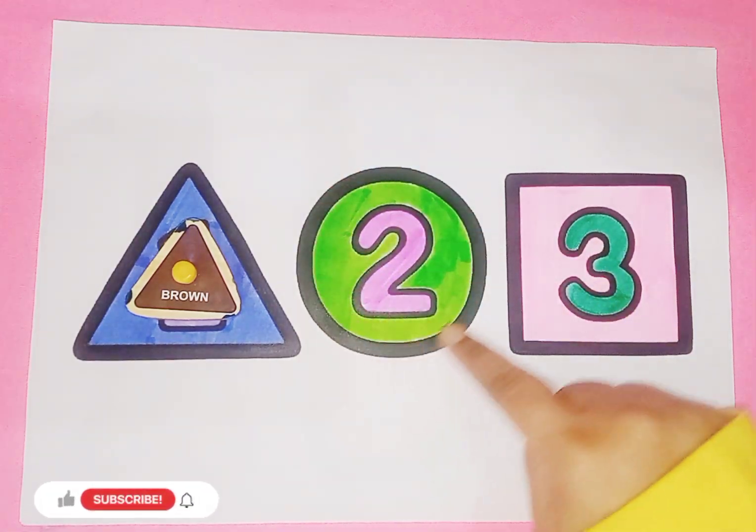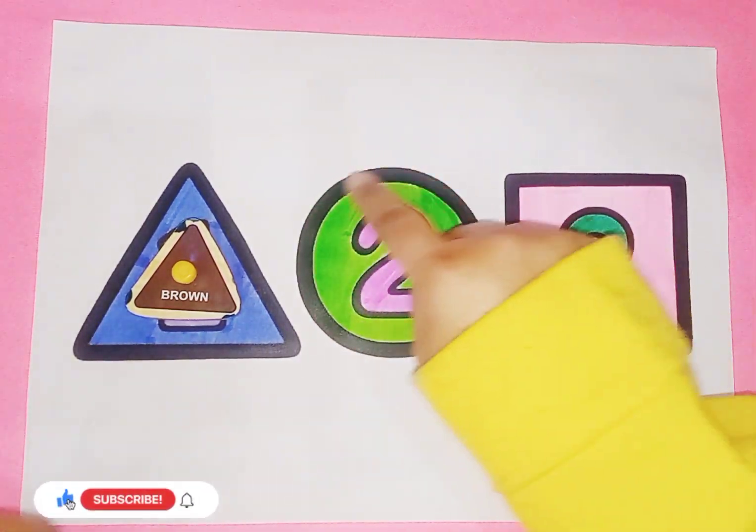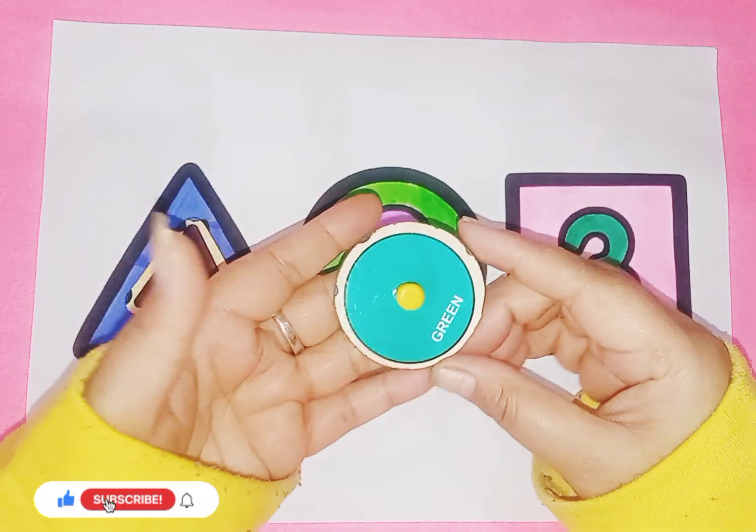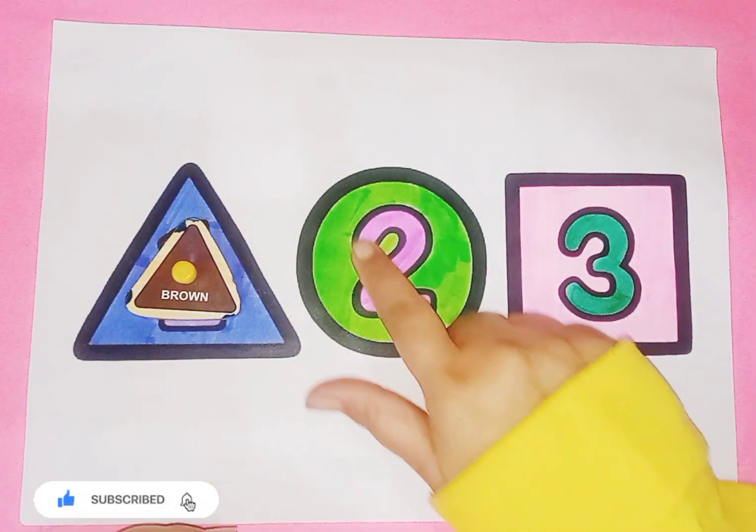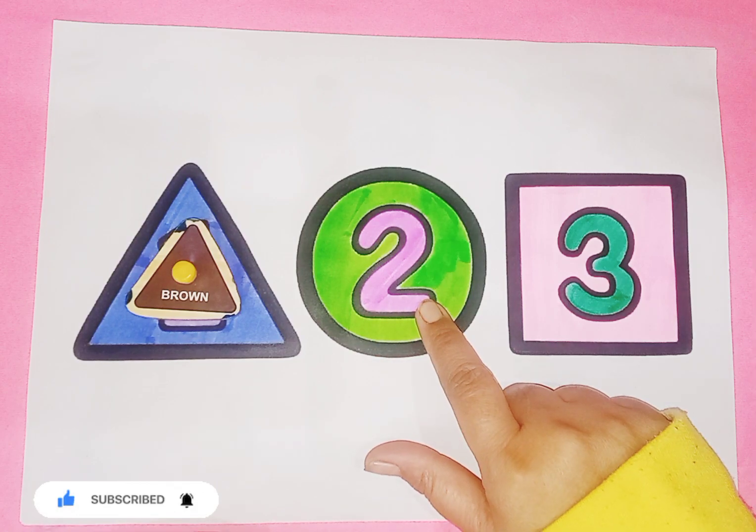Now this is circle. Round, round circle. Circle is like this, round, round circle. Number is two, T-W-O, two.